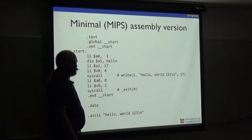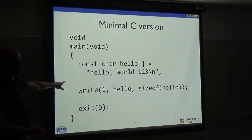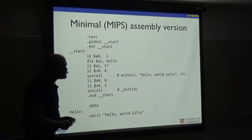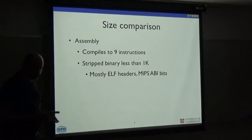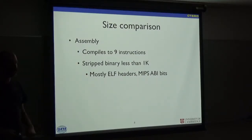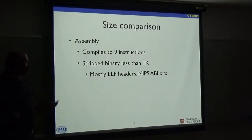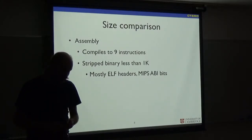This is the simplest program you can write that implements hello world. In fact, this program assembles to nothing like that. The simple assembly program here compiles down to nine instructions. One of the instructions expands into two instructions. The stripped binary is less than a kilobyte, and most of that is random bits of ELF headers.